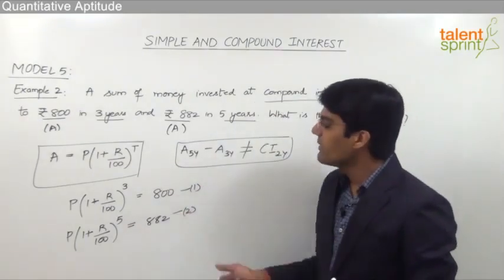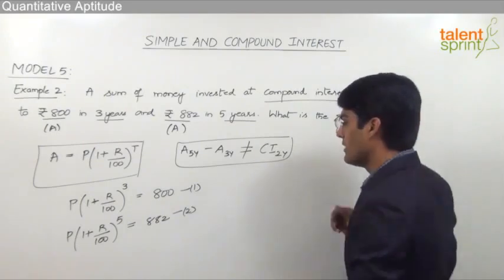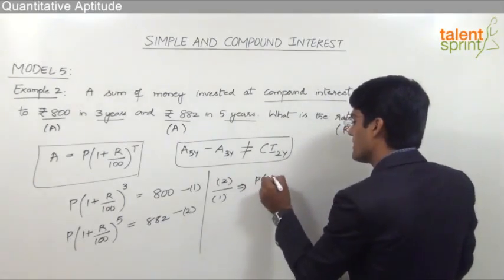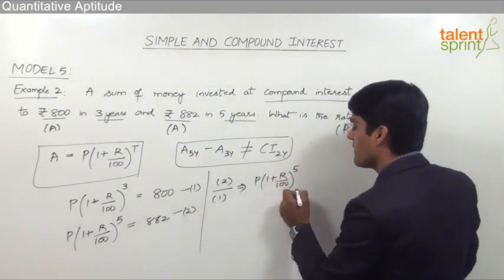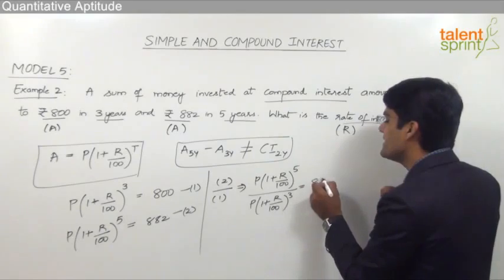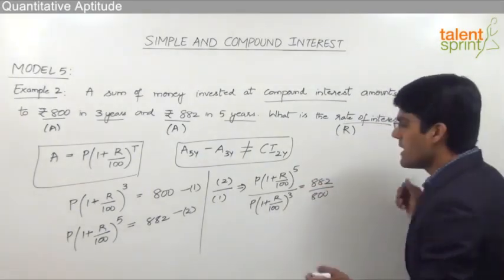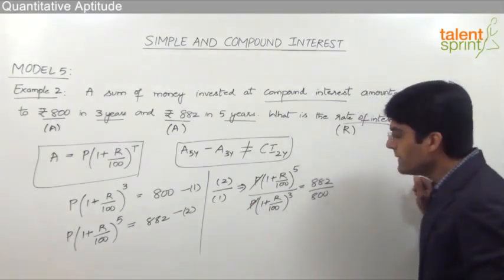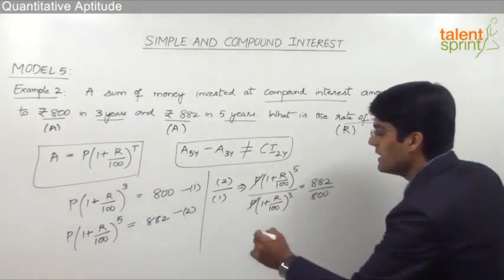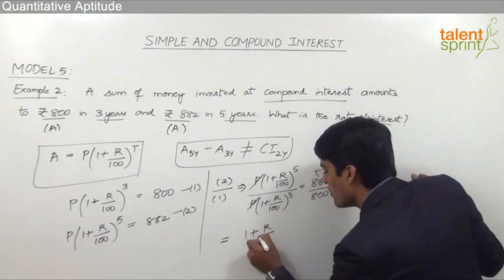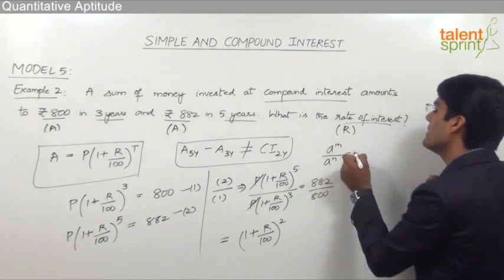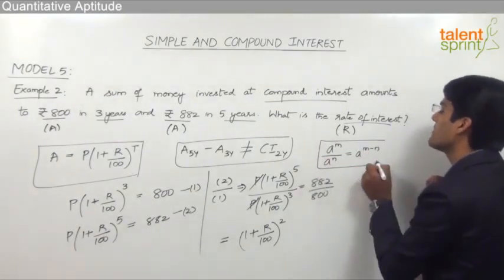To solve the two equations we need to divide the second equation by the first one. Dividing equation 2 by equation 1: principle into (1 plus r by 100) whole to the power of 5, divided by principle into (1 plus r by 100) whole to the power of 3, equals 882 divided by 800. Principle and principle cancel, and (1 plus r by 100)^5 divided by (1 plus r by 100)^3 gives (1 plus r by 100)^2, from the concept of indices: a^m divided by a^n equals a^(m minus n).